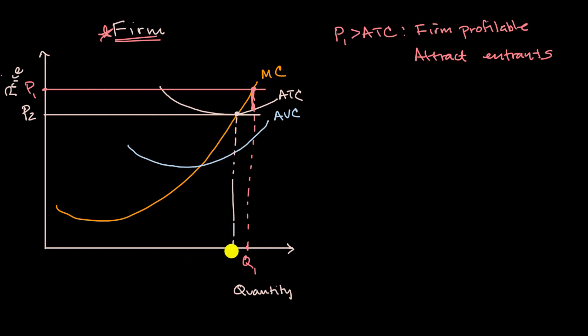And so this would be Q sub two. Now in this situation, P sub two is equal to the average total cost, so the firm is breakeven.